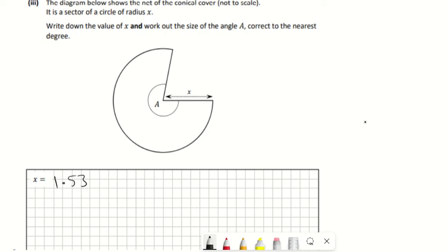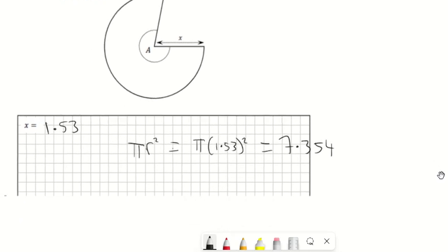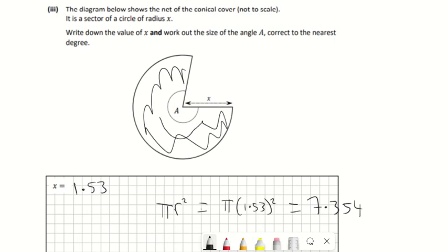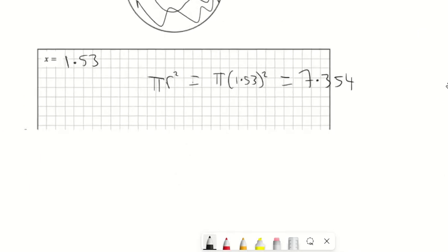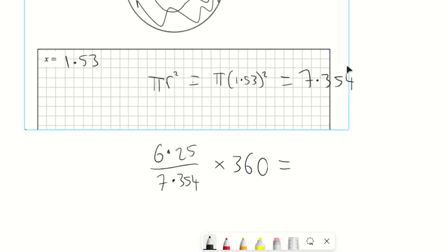For this one, let's work out the area of the full circle first. So π r², it'll be π times 1.53 squared, so we get 7.354 when rounded off. That's the area of the full circle. Now the area of the rest of it—this bit here has to be the same as the area of the curved surface of the cone above. So that's 6.25. I'm going to write 6.25 as a fraction of the full area of the full circle, and then to get the angle we're just going to multiply it by 360 because it's 360 degrees in the full circle. You should get 306 degrees in the end.